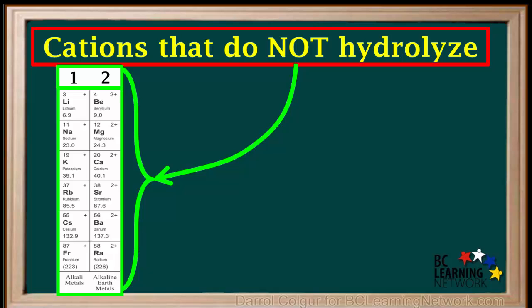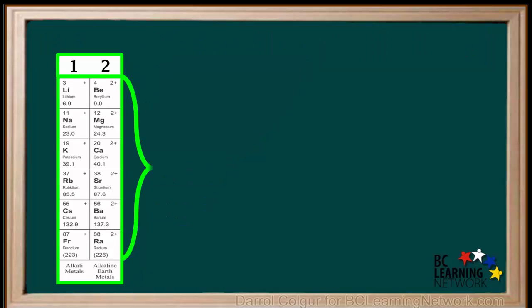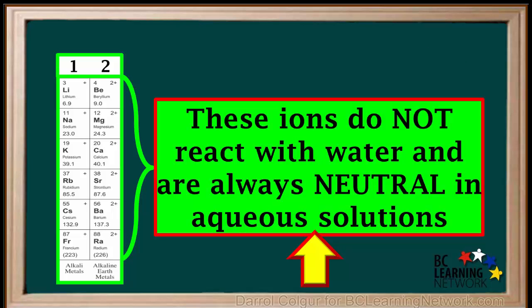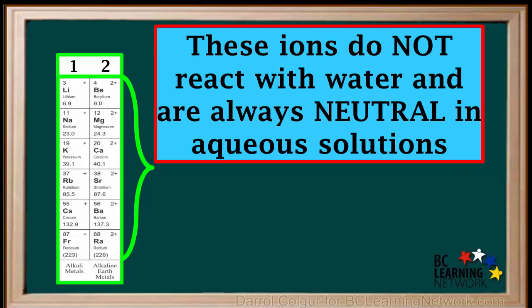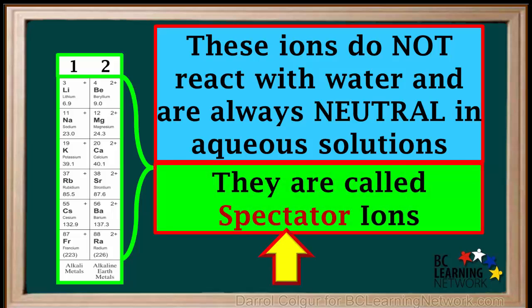These are the ions formed by the alkaline metals and the alkaline earth metals. So these ions do not react with water and are always neutral in aqueous solutions. Because they have no acid or base reactions, they are called spectator ions. It's actually useful to memorize these as spectator ions, ions which do not undergo hydrolysis.